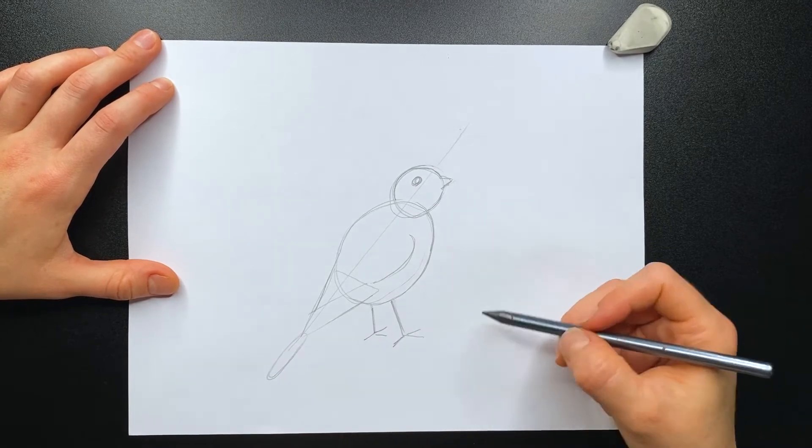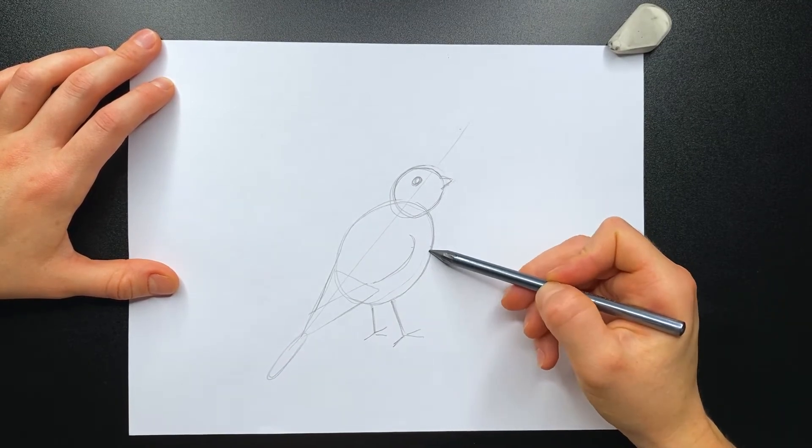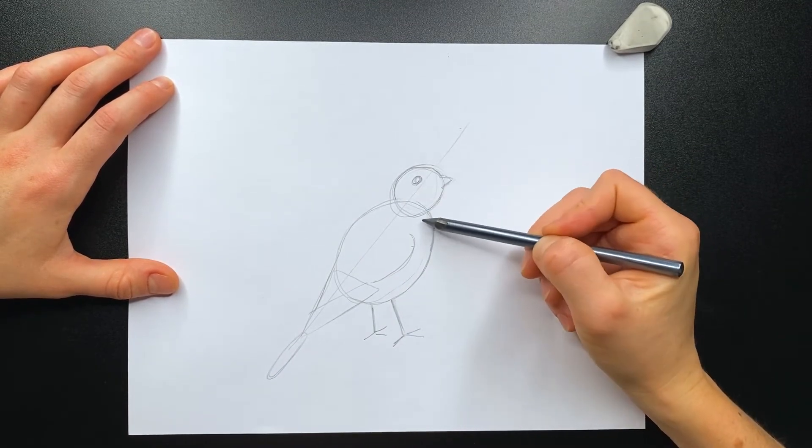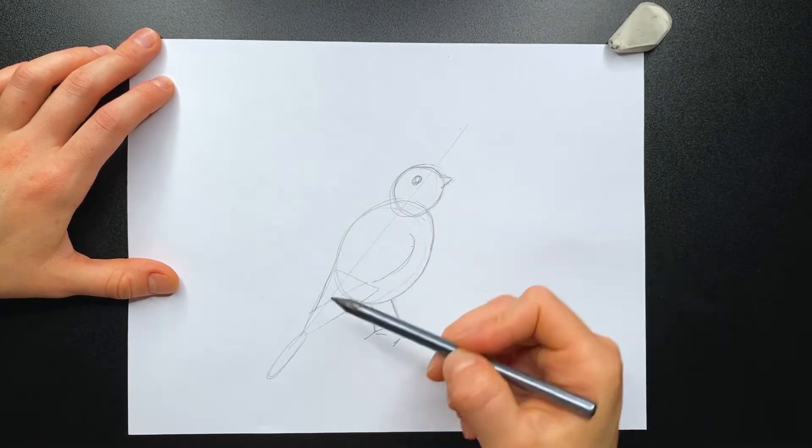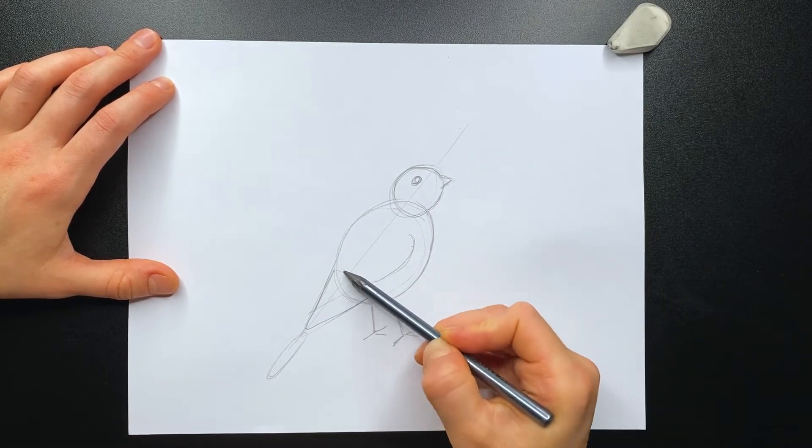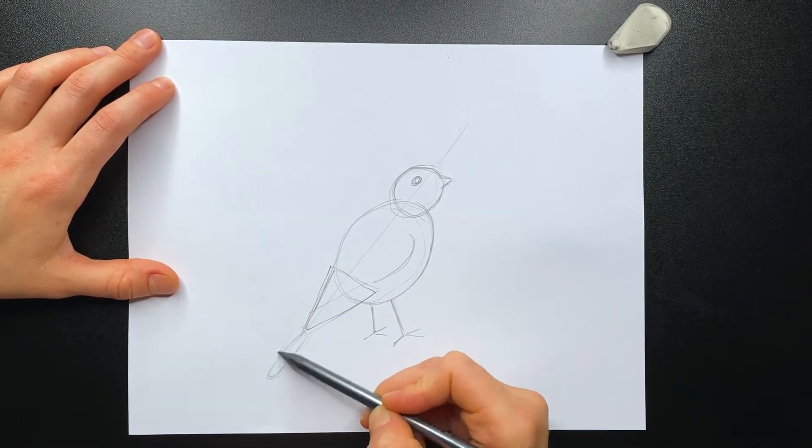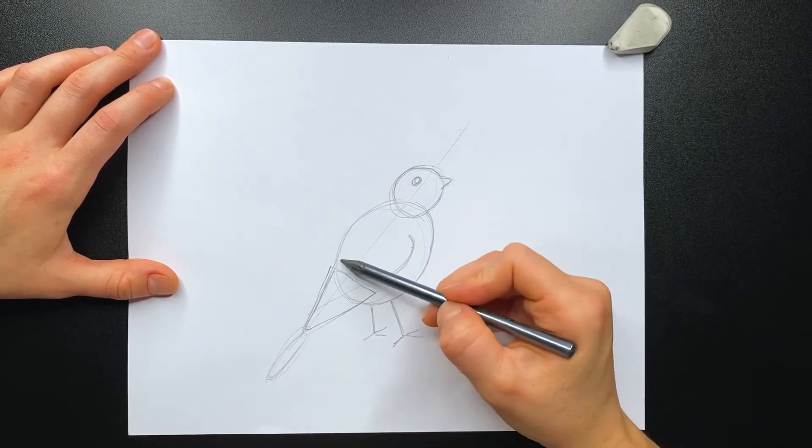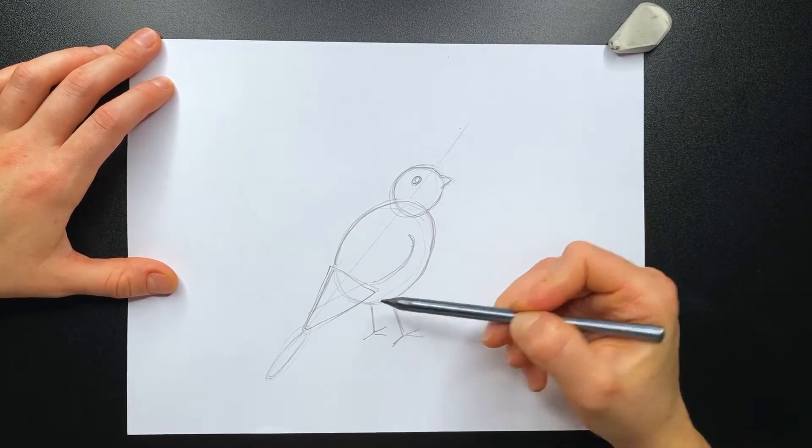Before I move to the next step, I make sure to check my shapes. I check the distance between the wing and the body. I check the size of my head compared to the body of the bird. Check the shapes of the tail and the wing. And if everything looks right, I can move to our next step.